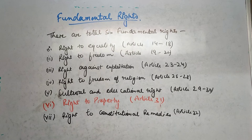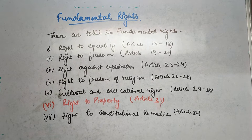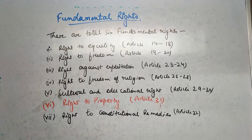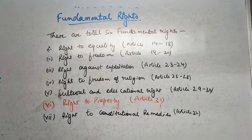Moving on to the next point — how many fundamental rights are there in the constitution? There are a total of six fundamental rights. First is the Right to Equality, Articles 14 to 18. Next is Right to Freedom, Articles 19 to 22. Next is Right Against Exploitation, Articles 23 to 24. Then Right to Freedom of Religion, Articles 25 to 28.